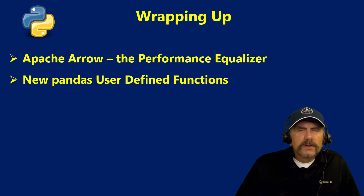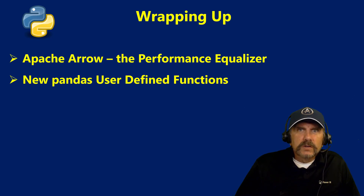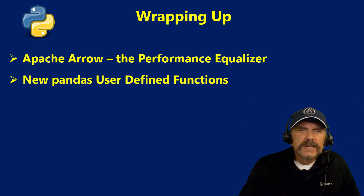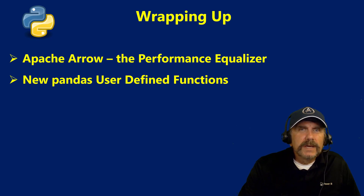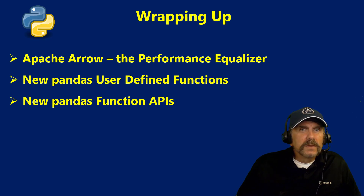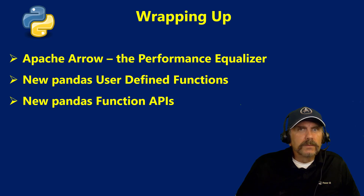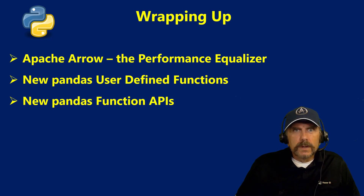We looked at new pandas user-defined functions, and really what we learned is that it's not so much totally new as it is an enhancement to the coding syntax — important because it was not quite as clean and consistent as it needed to be, and we're going to be taking advantage of type hints. Then we looked at new pandas function APIs, and the biggest distinguishing factor there is that they take in and return data frames, which is a really nice feature with a lot of power. And all of these are designed to work with Apache Arrow and perform really well.